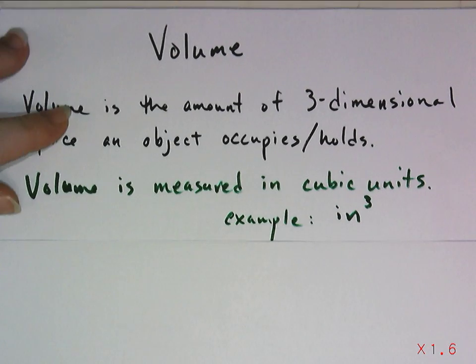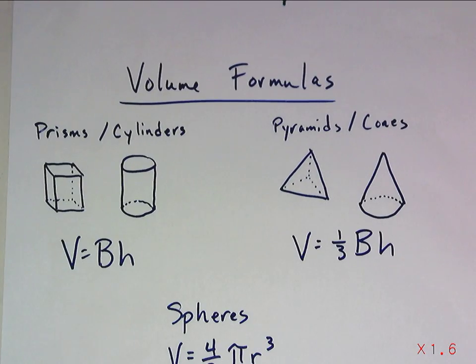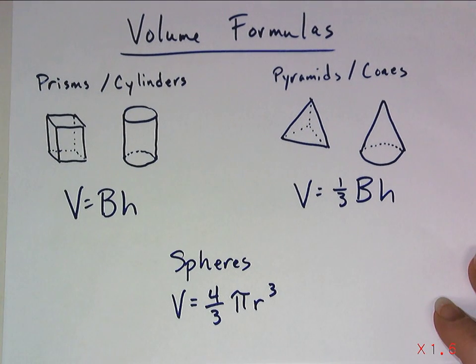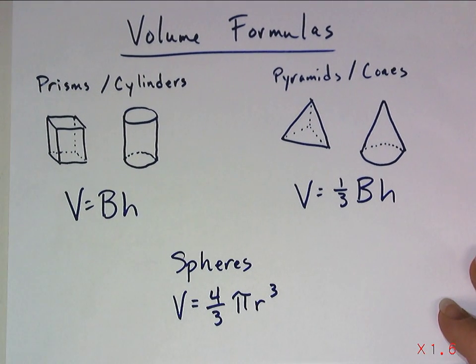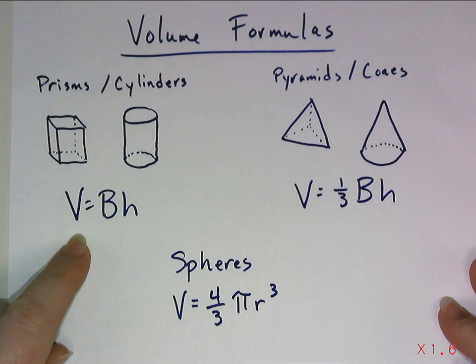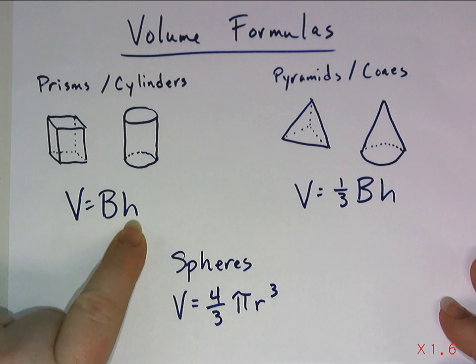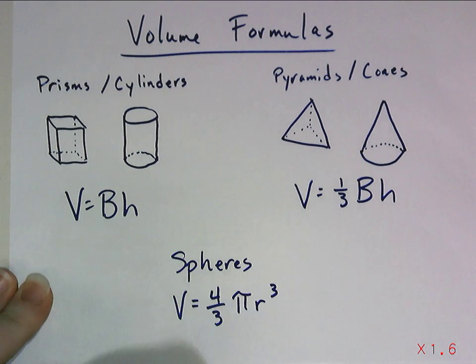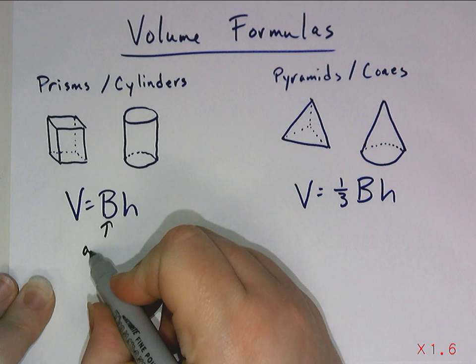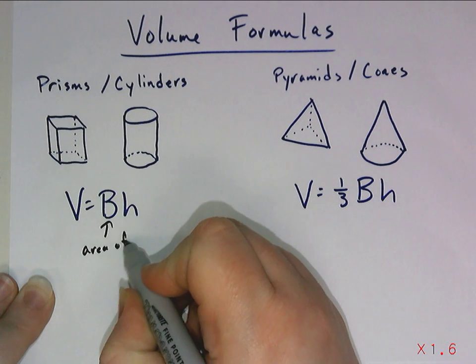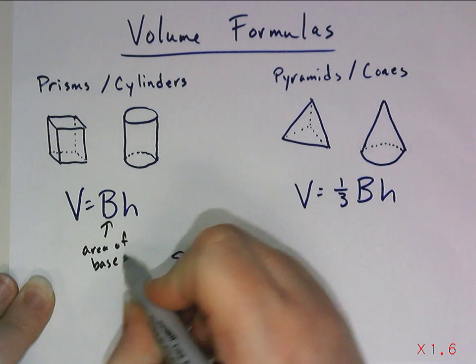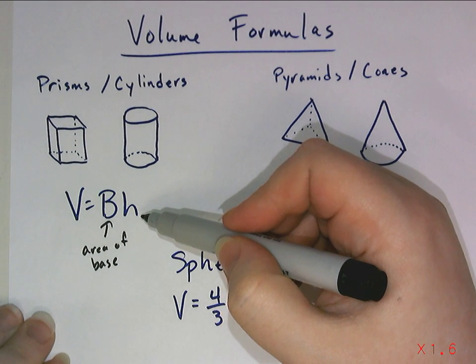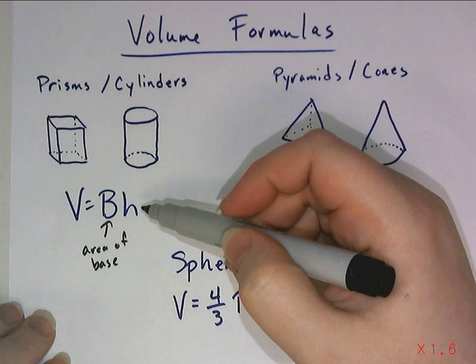If you look at your formula chart, you're going to see three main types of volume formulas. The first one is for prisms and cylinders. I drew a little sketch there for you. And the formula looks like this: V equals capital BH. So I want to remind you of a couple of things. That capital B is the area of the base. Whatever shape the base is, you need to find its area. Then the H does refer to height, but you need to remember that it's the height of the prism or the cylinder.